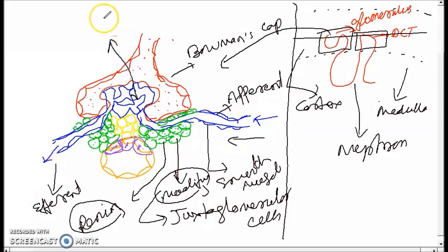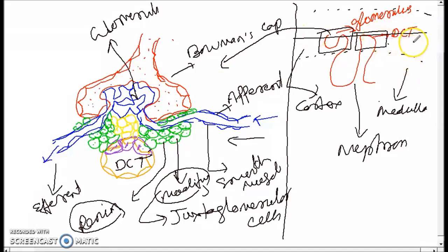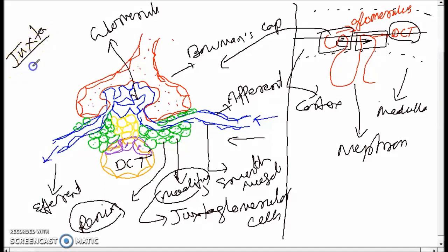This inner one is the glomerulus, and this is the afferent. This part is the DCT — distal convoluted tubule. The DCT and the juxtaglomerular cells are present very near to each other, as you can see here.